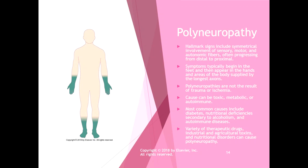Polyneuropathy has a symmetrical sock-and-glove presentation, involving sensory, motor, and autonomic fibers progressing from distal to proximal. It usually appears in the hands and feet — areas supplied by the longest axons. Polyneuropathies are usually not the result of trauma or ischemia; they're typically toxic, metabolic, or autoimmune. The most common causes are diabetes, nutritional deficiencies — particularly B12 — alcoholism, autoimmune diseases, and industrial or agricultural toxins.